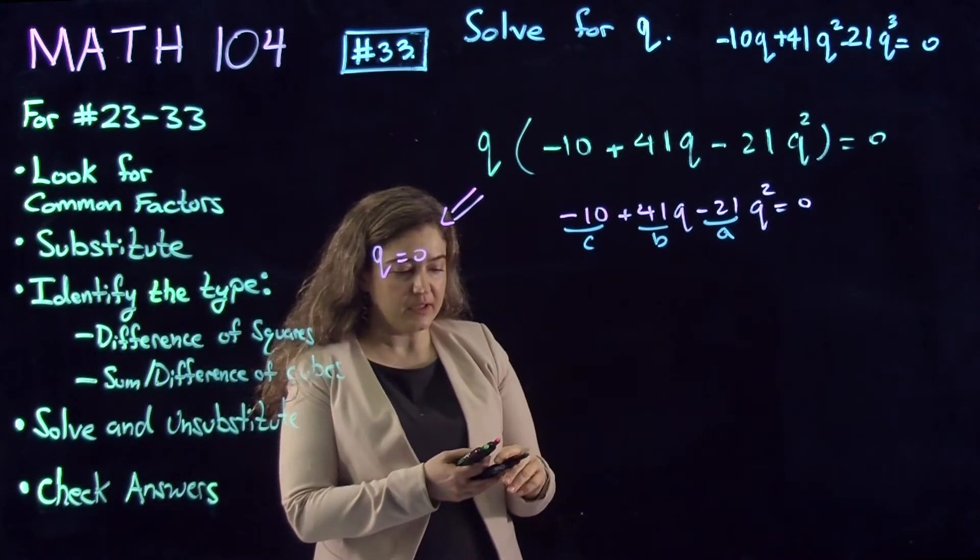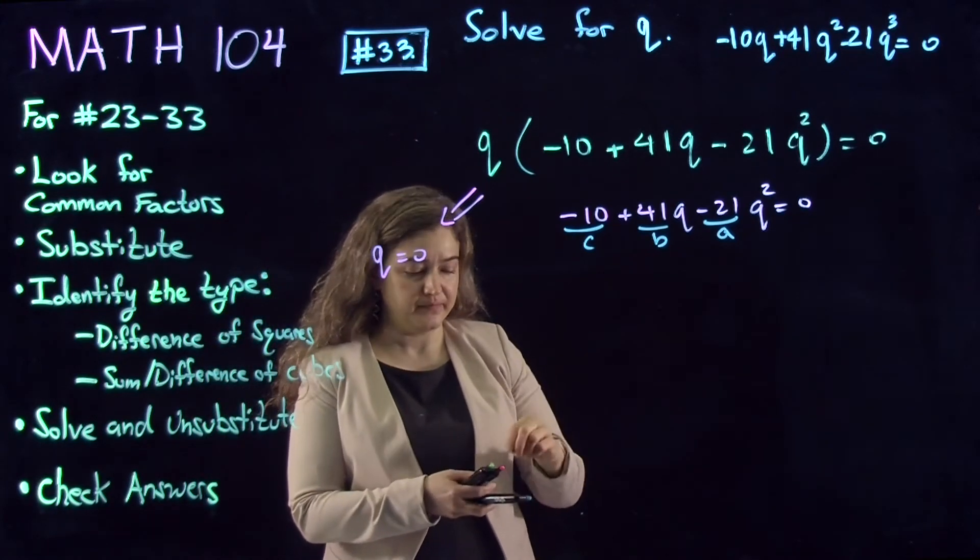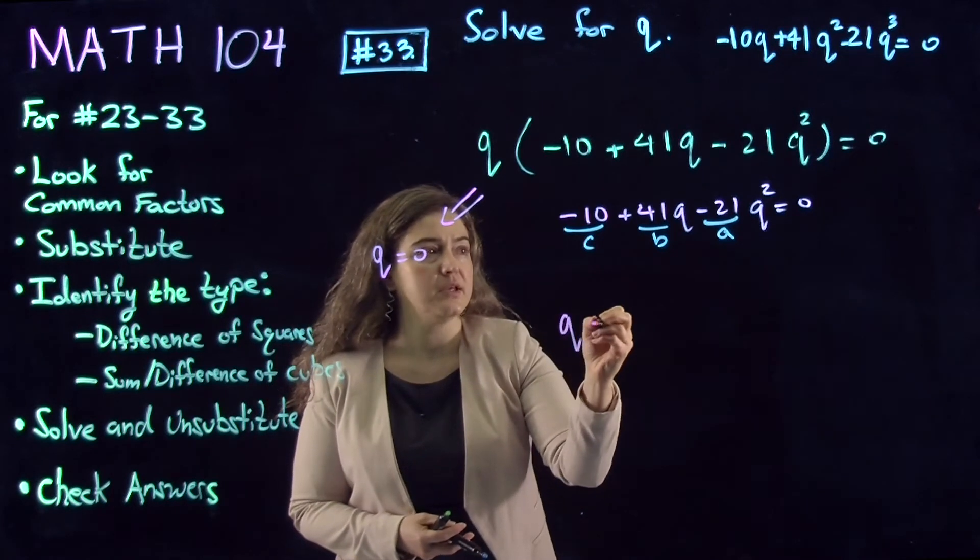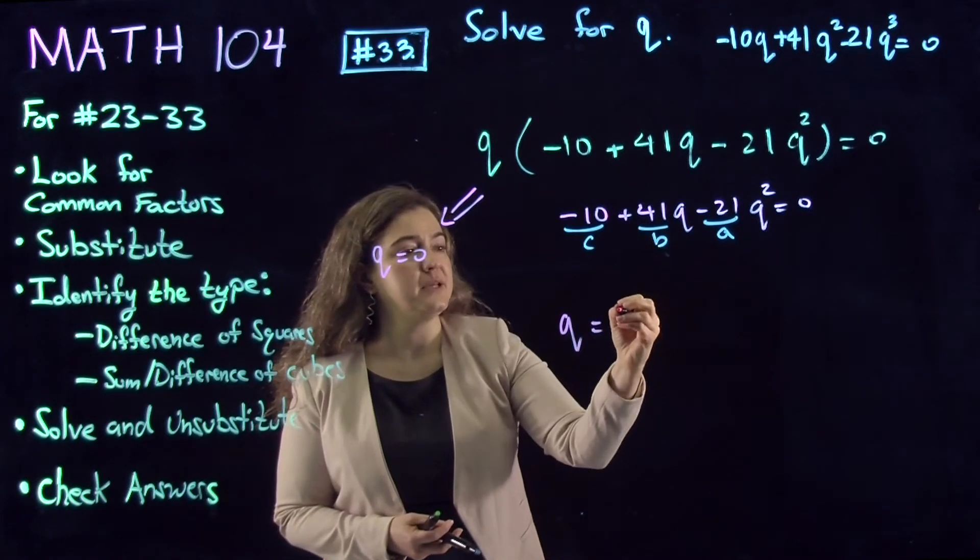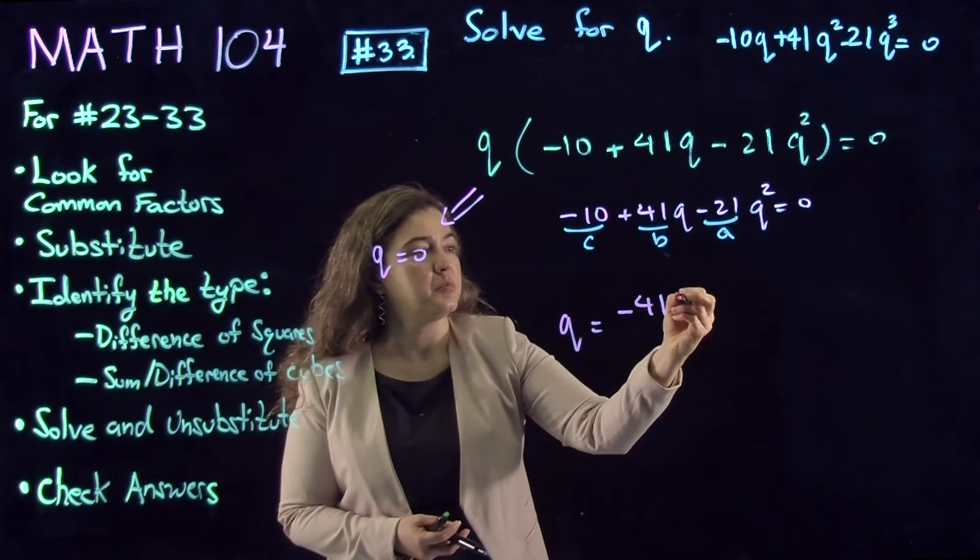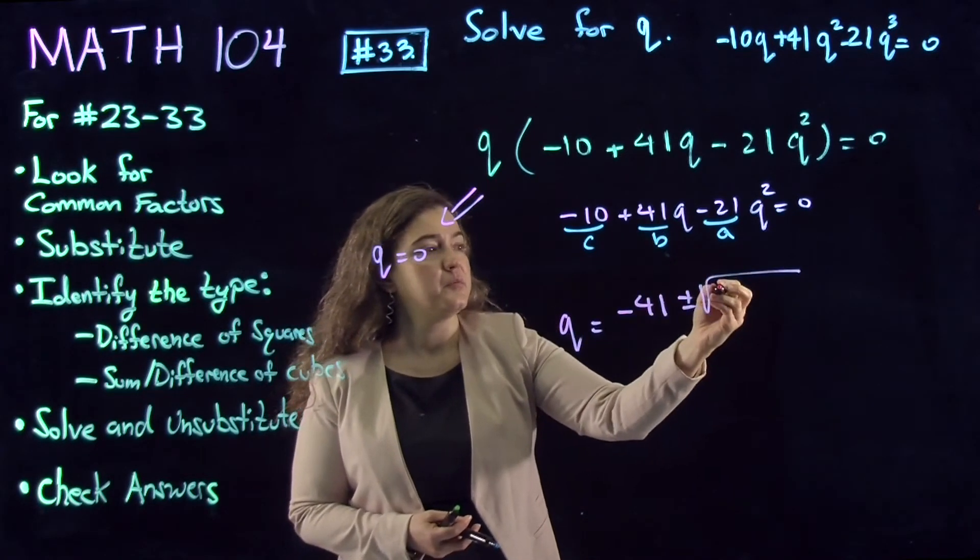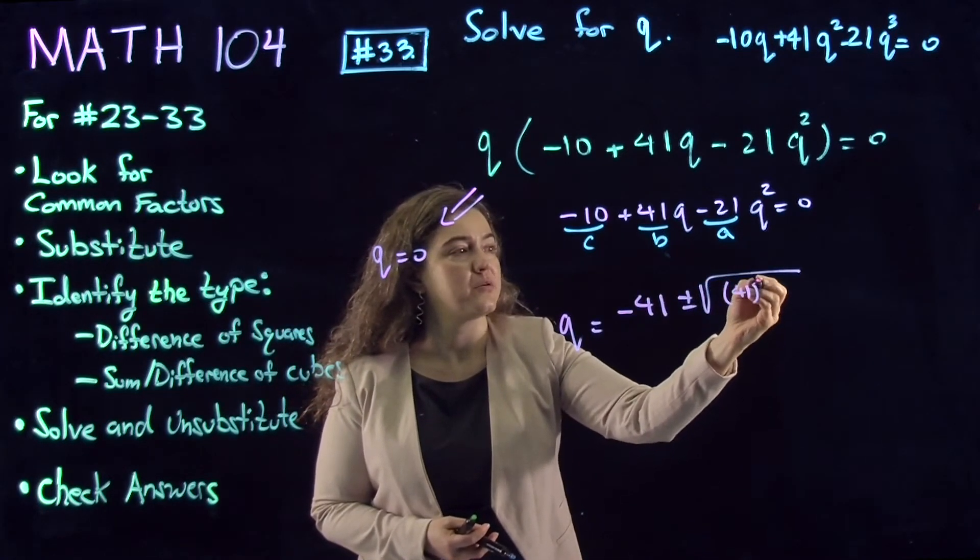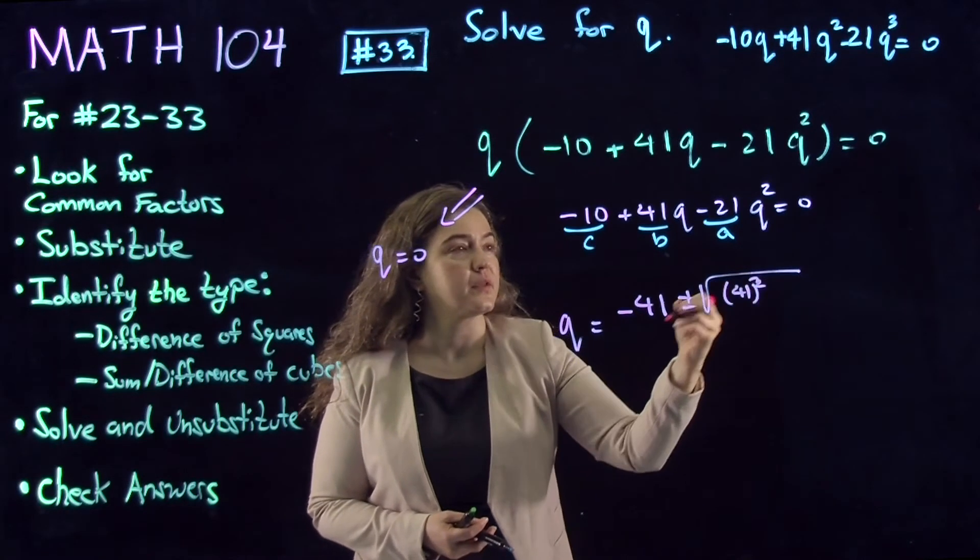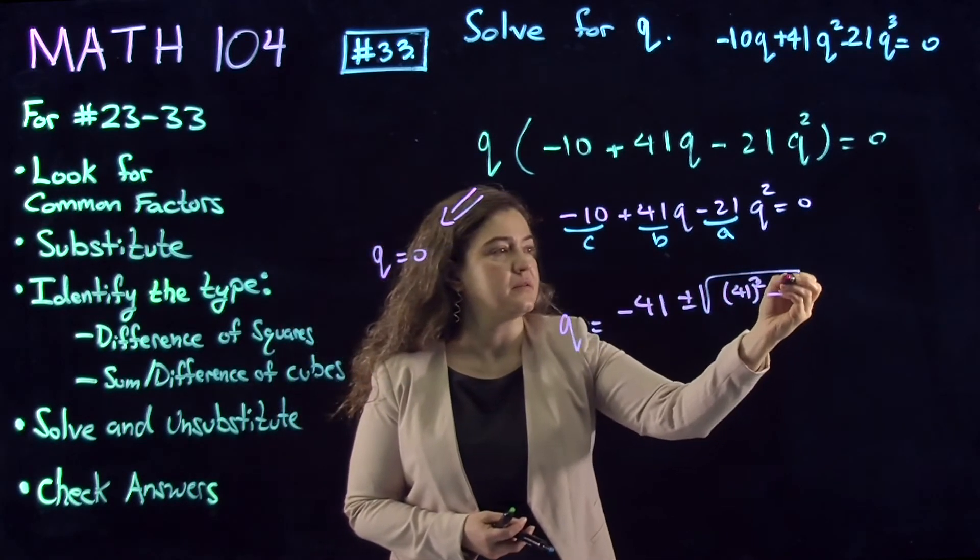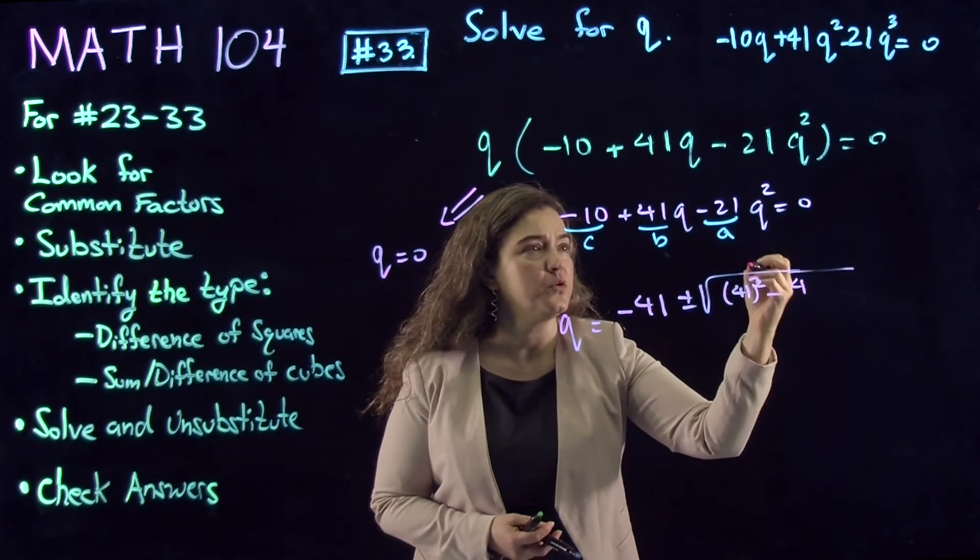So the answers that we're going to get here is q = -b ± √(b² - 4ac).